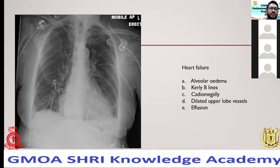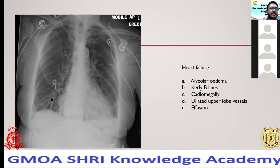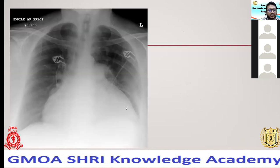Looking at the costophrenic angles, there is blunting on the left side indicating a small pleural effusion; the right side is fairly okay but the left side has a small effusion. There is alveolar edema, cardiomegaly, Kerley B lines, and upper lobe blood diversion. This is a typical chest X-ray of a patient with heart failure. Though at first glance it looks relatively normal, careful examination with clinical correlation reveals a classic heart failure picture.